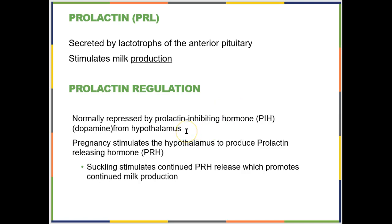Under non-pregnant, non-lactating circumstances, the hypothalamus is going to release prolactin inhibiting hormone — which is actually just dopamine — and that prevents the anterior pituitary from making prolactin. Then during pregnancy, some stimulus from the uterus or the placenta lets the hypothalamus know that it is time to start producing milk. That signal causes the hypothalamus to start making PRH, or prolactin-releasing hormone, which stimulates milk production. Whenever you have suckling, that creates a positive feedback loop and just keeps the PRH coming.